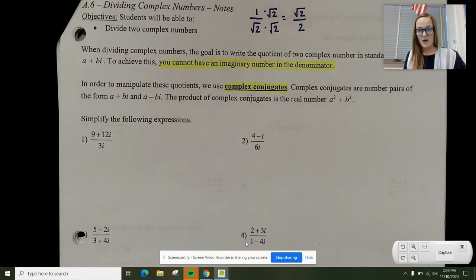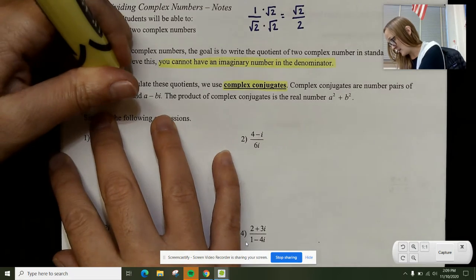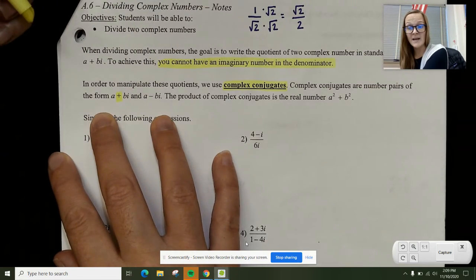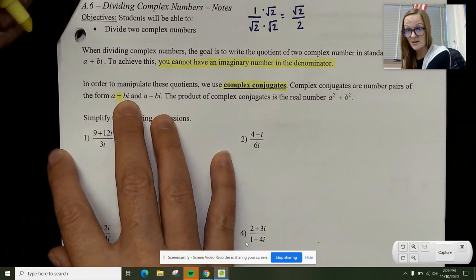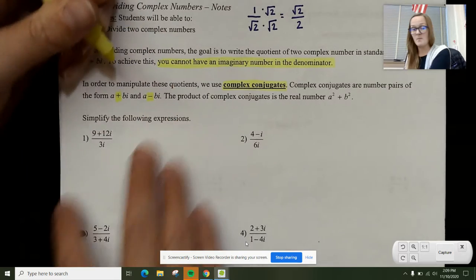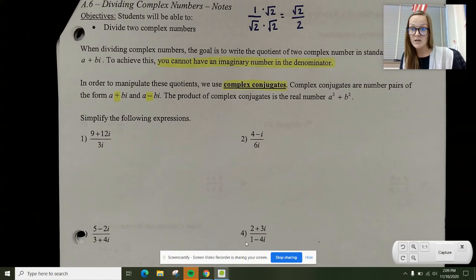That might seem really complex. What I want you to focus on is the fact that the difference between these is that one has a positive imaginary number and one has a negative imaginary number. The only thing that's changing is the sign in front of the imaginary number.